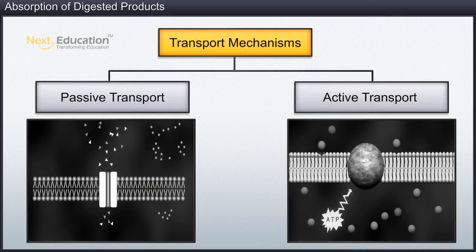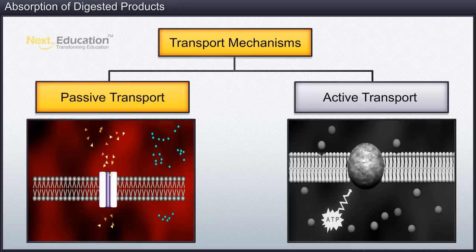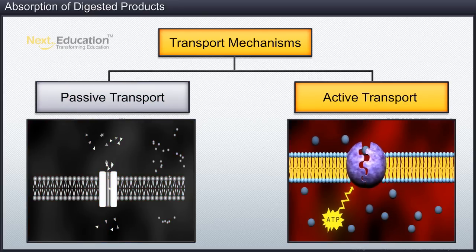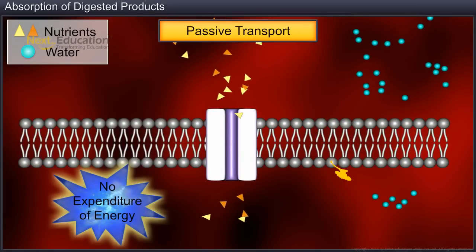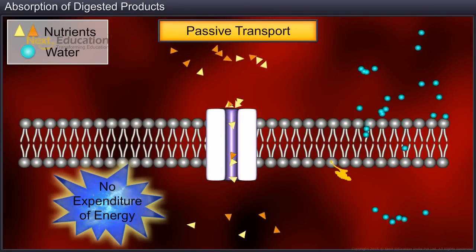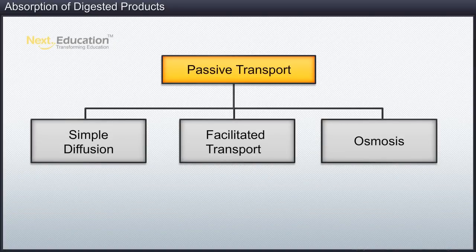Absorption takes place in the intestinal mucosa through passive transport and active transport. In passive transport, there is no expenditure of energy. There are three types of passive transport: simple diffusion, facilitated transport and osmosis, that assist in absorption.